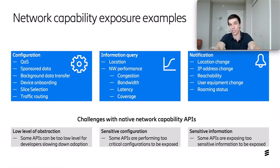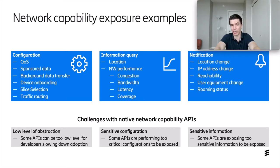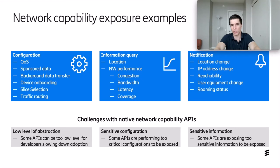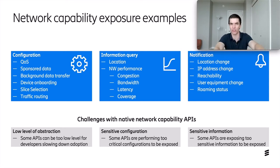For information query, location enables cellular positioning. Network performance provides real-time or predictive information about congestion, bandwidth, latency, and coverage. The developer can also subscribe to notifications about client location change, IP address change, reachability, user equipment change, and roaming status. These capabilities can really enable dynamic interactions between the networks and the devices for these advanced next-generation use cases.